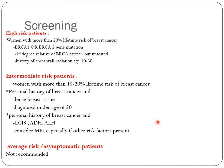Intermediate-risk patients include those with a history of breast cancer plus dense breast tissue, or diagnosis under age 50. Intermediate-risk diagnoses include lobular carcinoma in situ, atypical ductal hyperplasia, and atypical lobular hyperplasia — MRI is especially recommended if other risk factors are present. For average-risk patients, MRI screening is not recommended.